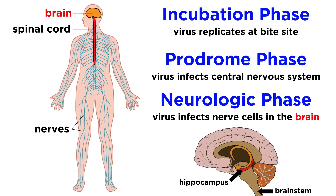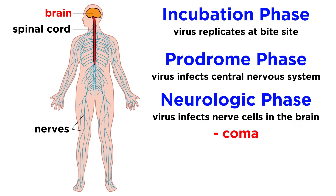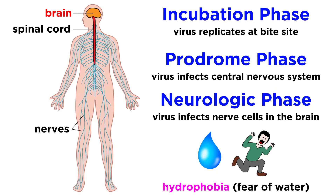Within the brain, the brainstem, hippocampus, and critically important nerve cells then become infected, which cause the classic symptoms: coma and death. This is the neurologic phase. These classic symptoms are typically neurological in nature, and the most common symptom — which happens in 20–50% of cases — is a fear of water, or hydrophobia.